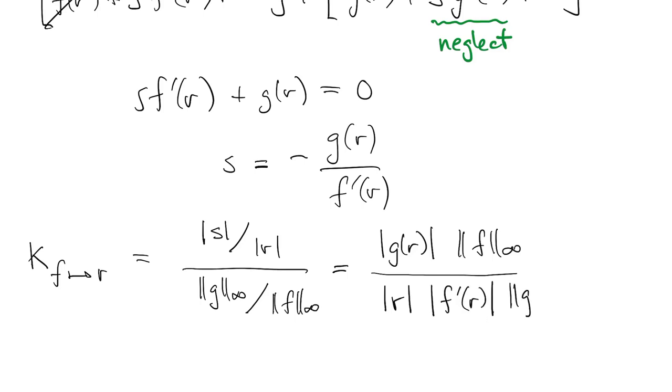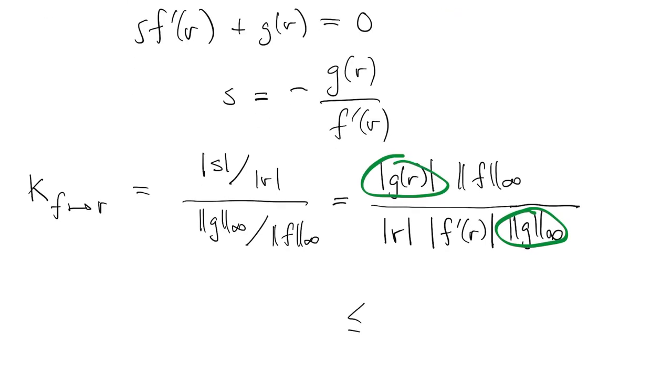If we think about maximizing over all possible perturbations g, then you realize that this ratio is always less than or equal to one, and we could make it one in the worst case. So we're left with this expression as our condition number.